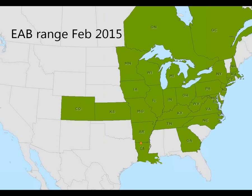As of 2015, Kansas, Colorado, and most recently Louisiana have had findings of emerald ash borer. In February of this year, foresters in Louisiana found borer damage and an active infestation right near the border of Louisiana and Arkansas — about 40 miles from Texas. So we've got about 40 to 50 miles out right now, as far as we know.